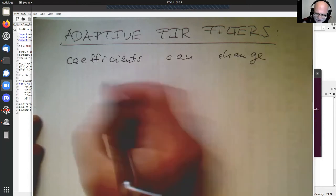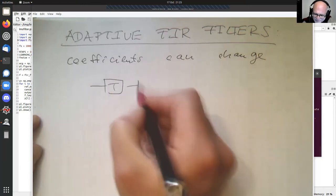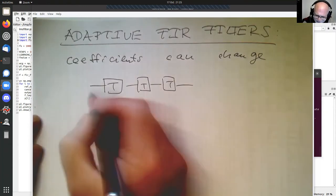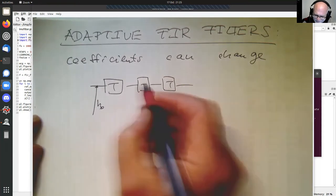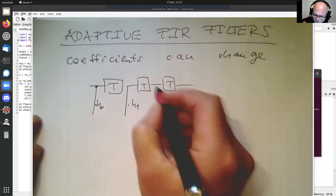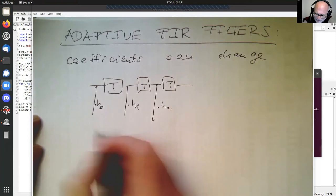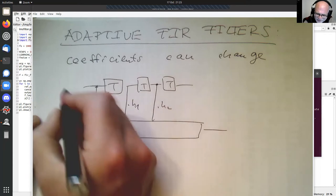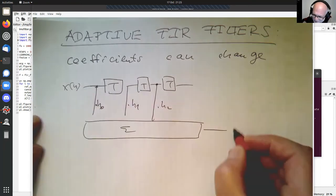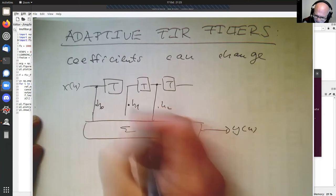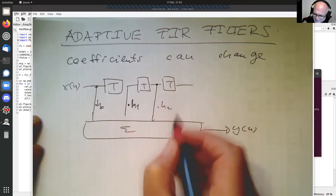So remember our FIR filter was something like that. We have here multiplied by this coefficient, then multiplied by this coefficient, and multiplied by this coefficient. And then we have an output here. So that's our input X, that's our output Y.